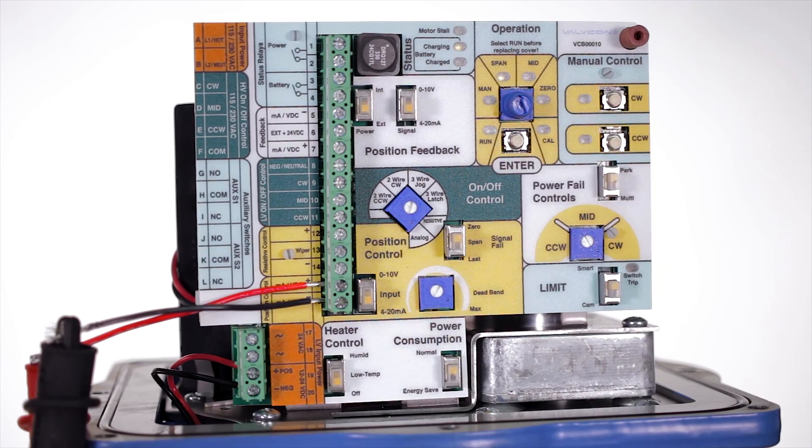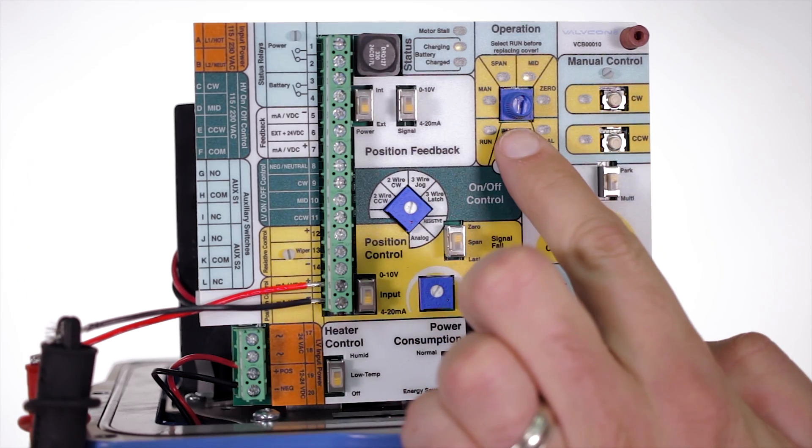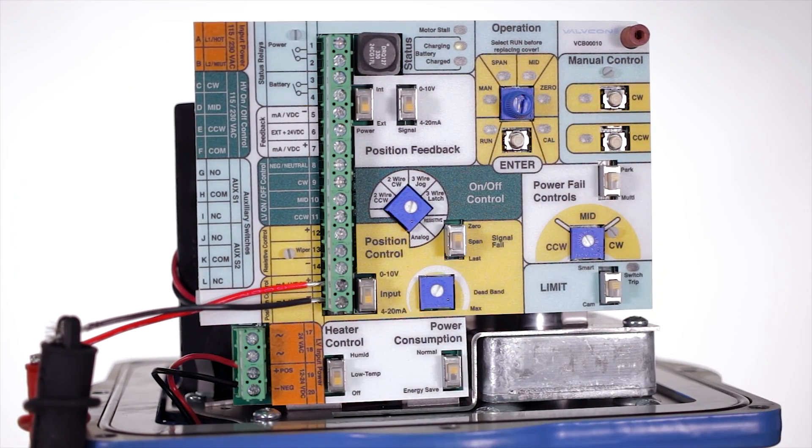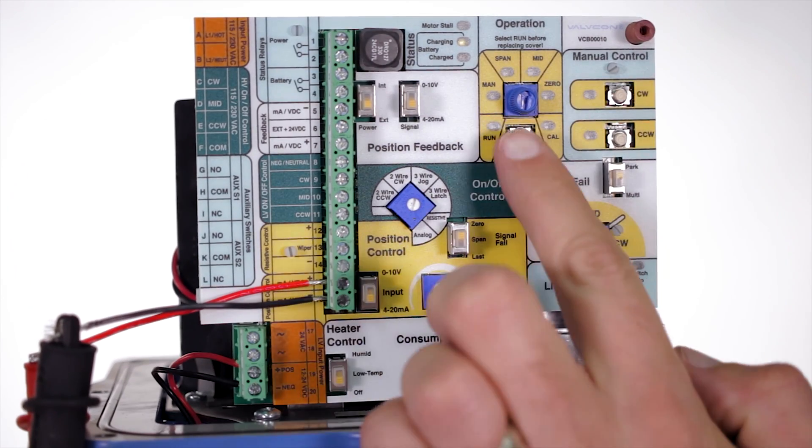If you want the actuator to have a different fail position than fully open or fully closed, turn the operation mode switch to mid, hold enter until it flashes, then set the valve to the desired position and press enter to lock it in.